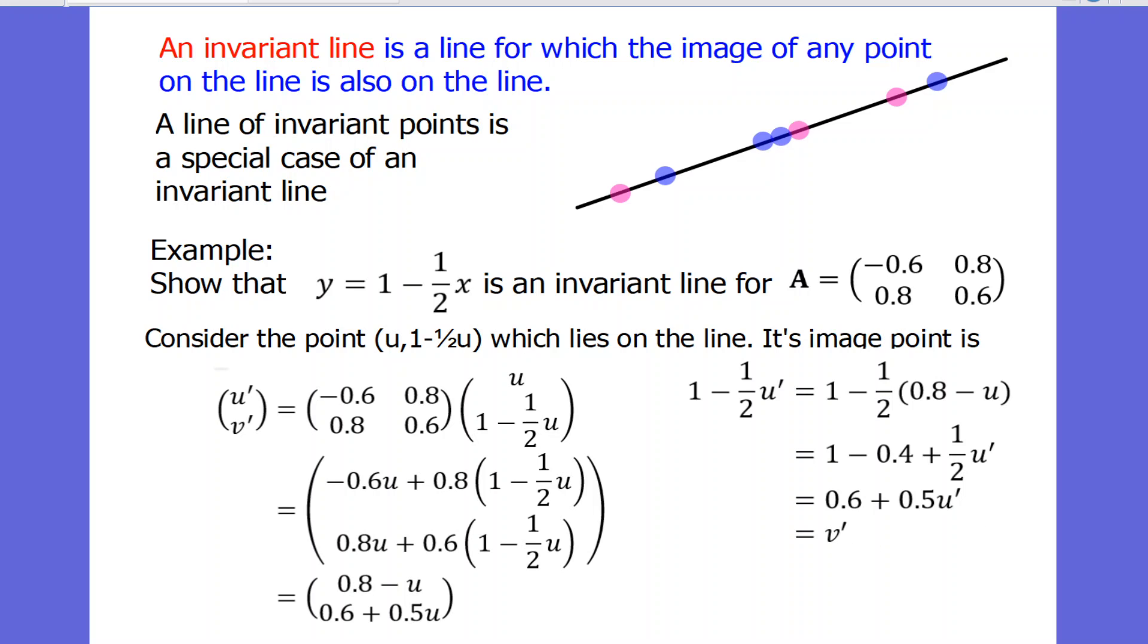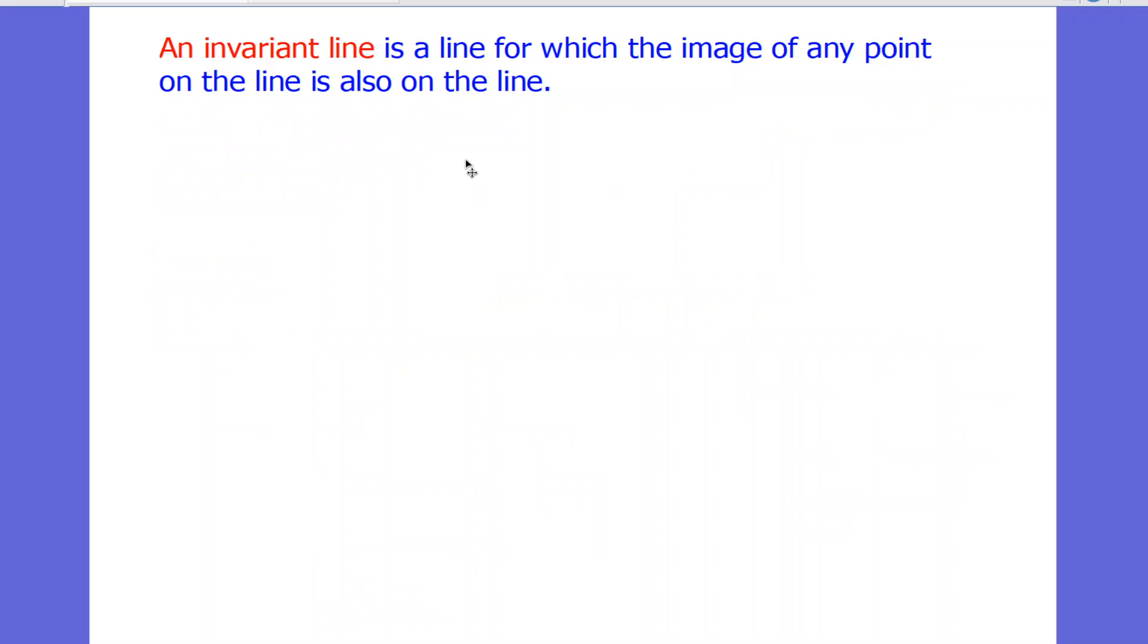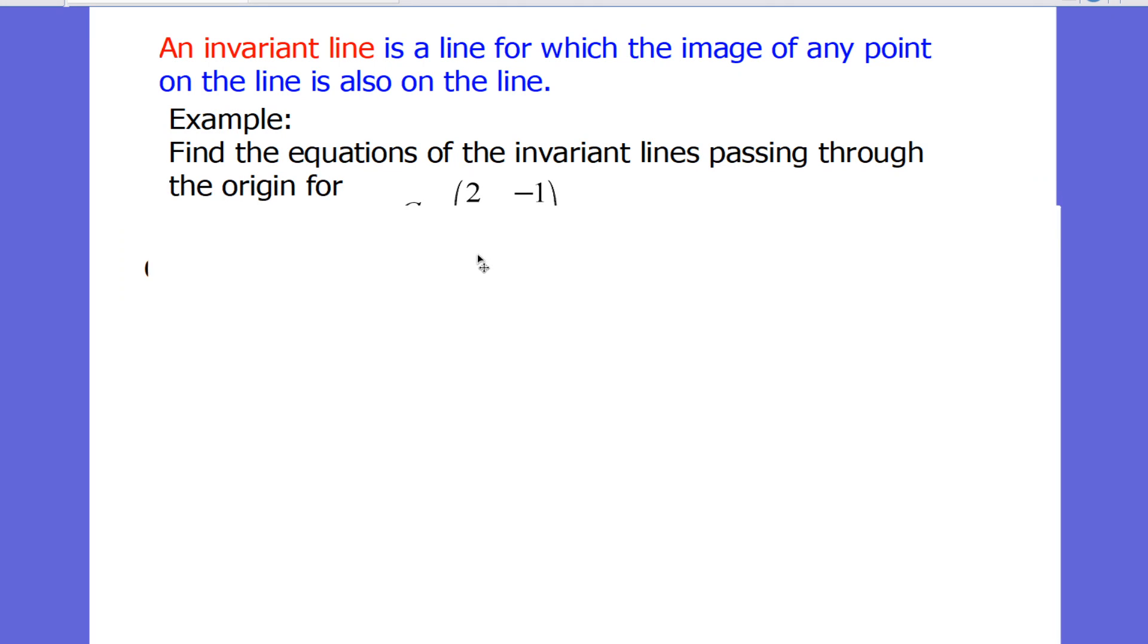However, there's a different sort of invariant line you might be asked to look at. And this is one where you're told it passes through the origin. You might recognize this matrix. We used it for the line of invariant points. So we actually know there's going to be one invariant line. The question is, is there another one? And how do we get the first one to come up? We're going to consider a point on the line y equals mx. We don't know the value for m. This is going to become an unknown.